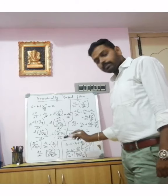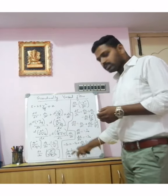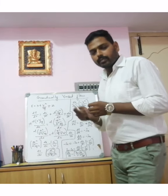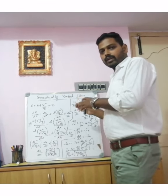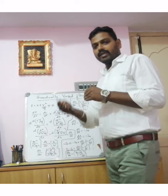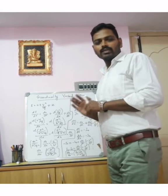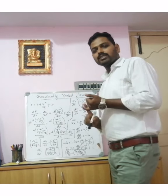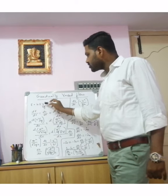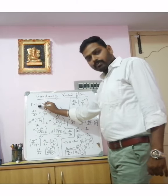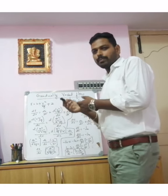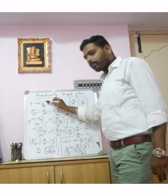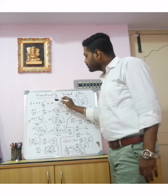The governing equation for gradually varied flow is: dH/dx = (Ib - Ie) / (1 - v²/gH). Here H is the depth of flow, x is the distance from the datum line, and dH/dx represents the change in depth of flow from the datum. We prove this starting from the total energy equation: E = H + v²/2g + z, where H is the pressure head, v²/2g is the velocity head, and z is the datum head.